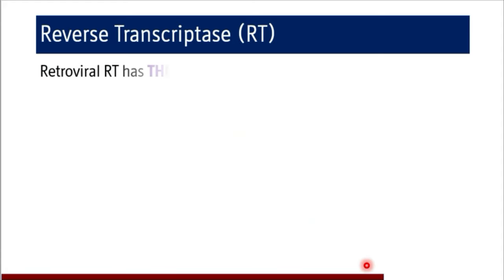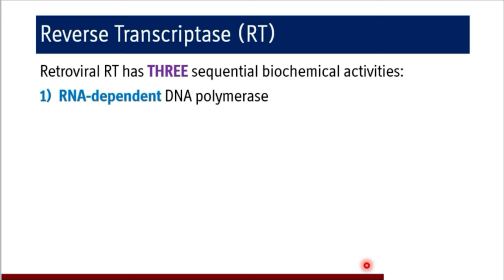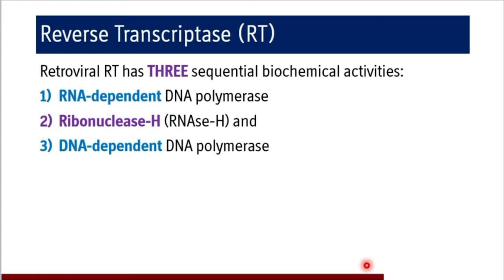The reverse transcriptase enzyme has three sequential biochemical activities. It is an all-rounder enzyme and does not require any other enzyme for the complete reverse transcription process except S1 nuclease. The three activities are: RNA-dependent DNA polymerase, which synthesizes DNA based on the RNA genome of retroviruses; RNase H activity, which destroys the RNA after DNA is synthesized; and DNA-dependent DNA polymerase activity, which replicates the resulting DNA template. All three activities are present in the single reverse transcriptase enzyme.